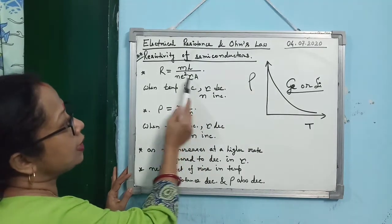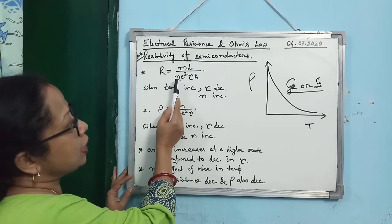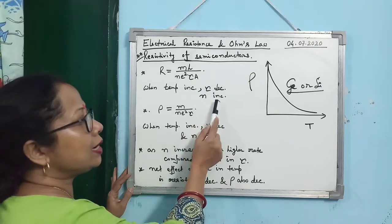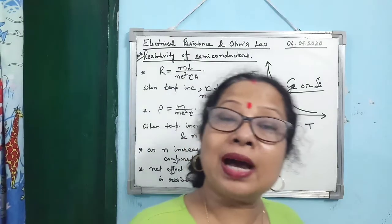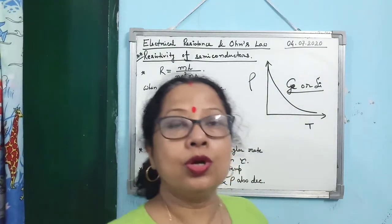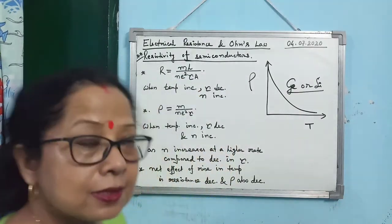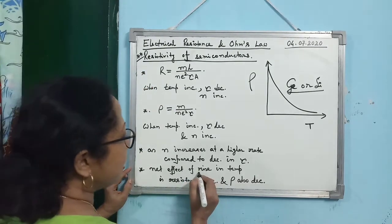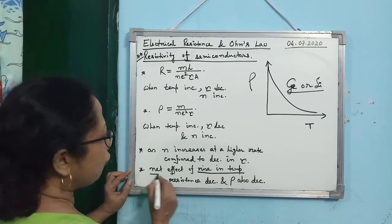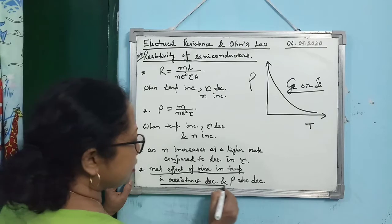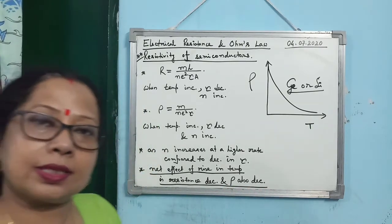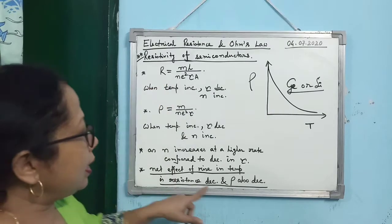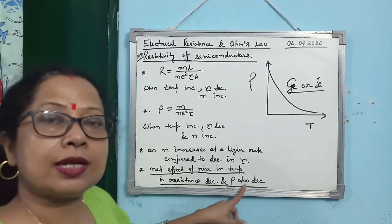If τ decreases, resistance should increase; if n increases, resistance should decrease. In semiconductors, the rate of increment of n is much higher than the rate of decrease in τ. So the overall effect is that resistance decreases. The net effect of rising temperature is that resistance as well as resistivity decreases. As n increases many fold, resistance and specific resistance both decrease.